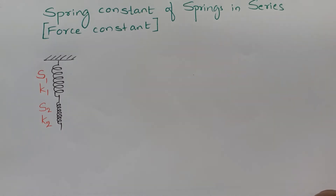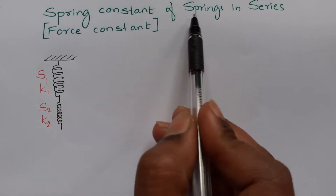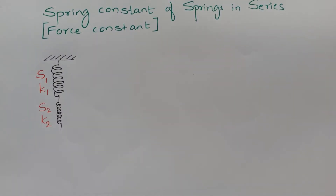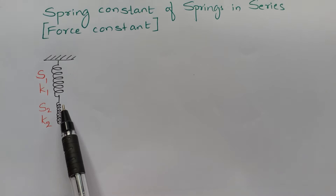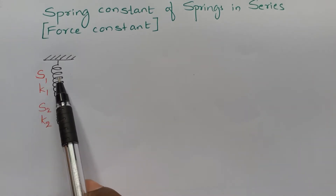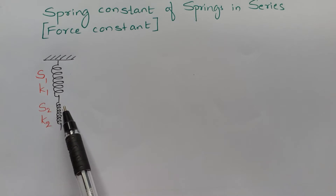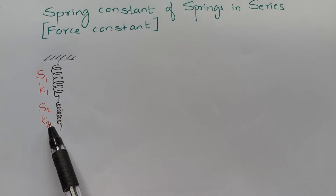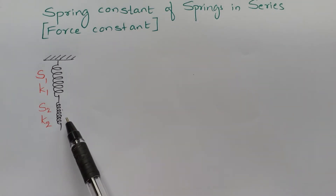Hello everyone. Now we will find out the spring constant of springs in series combination, also called the force constant. Here we have considered two springs: spring S1 with spring constant K1, and spring S2 with spring constant K2. There is no load. So this is without any load. We have connected two springs in series.